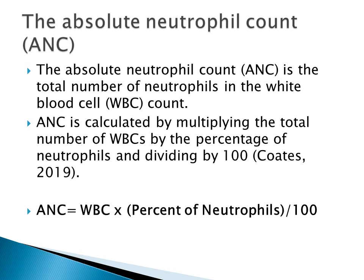What about the absolute neutrophil count? Absolute neutrophil count is the total number of neutrophils in the white blood cell count. It is calculated by multiplying the total number of white blood cells by the percentage of neutrophils and dividing by 100, according to Code 2019. The simple representation is: WBC times the percent of neutrophils.